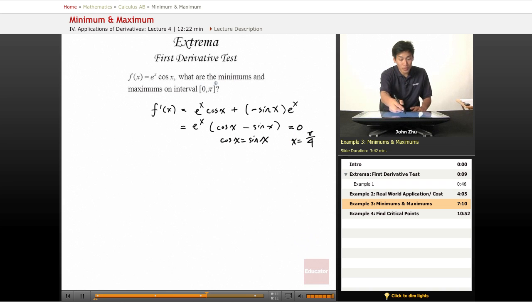We're looking for the interval between 0 and pi, so pi over 4 is the only critical value.